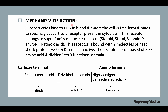Regarding mechanism of action: glucocorticoids bind to CBG in blood and enter the cell in free form, then bind to a specific glucocorticoid receptor present in the cytoplasm. This receptor belongs to the superfamily of nuclear receptors. The receptor is bound with two molecules of heat shock protein and remains inactive. It is composed of 800 amino acids divided into three functional domains.